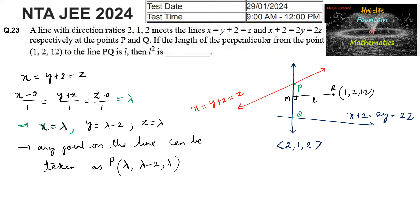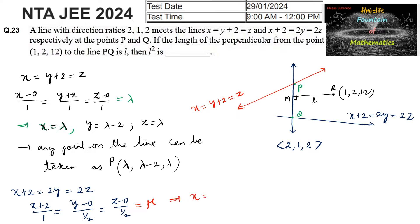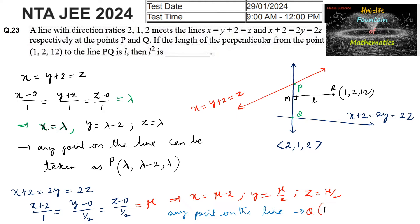The second line x+2 = 2y = 2z can be expressed as (x+2)/1 = (y-0)/(1/2) = (z-0)/(1/2). Let 2b = μ, so the x-coordinate is μ-2, y-coordinate is μ/2, and z-coordinate is μ/2. Any point Q on this second line is (μ-2, μ/2, μ/2).